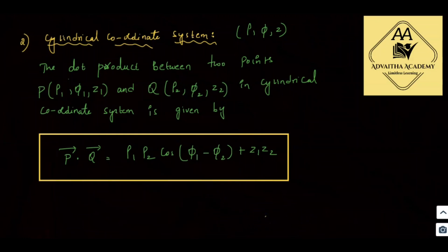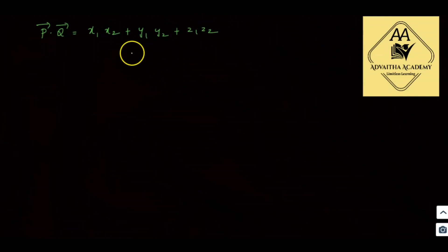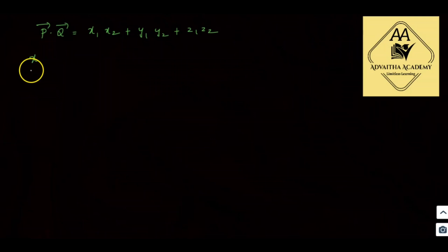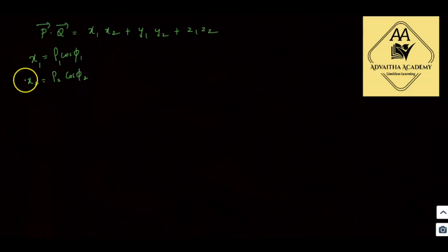This formula is the basic function. So P bar dot Q bar — in the Cartesian coordinate system it is X1·X2 plus Y1·Y2 plus Z1·Z2. This is the formula for the cylindrical coordinate system, which is derived from the Cartesian coordinate system class. The x value: x is equal to rho·cos(phi).